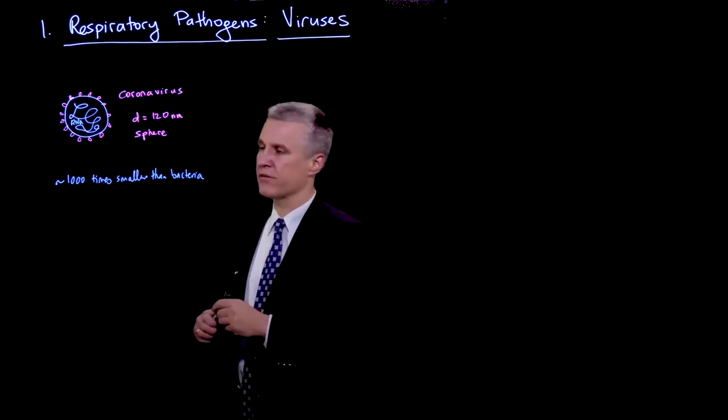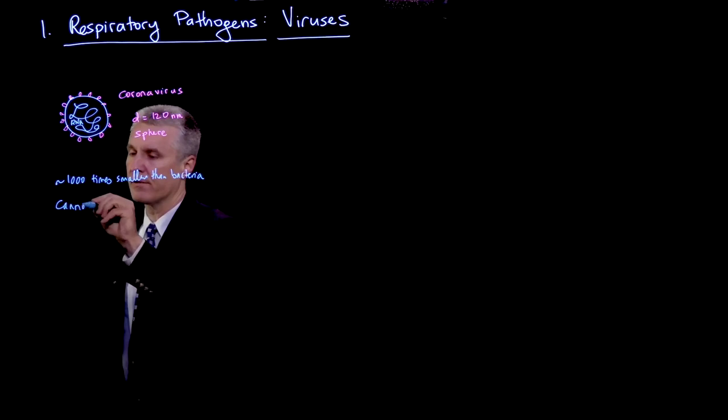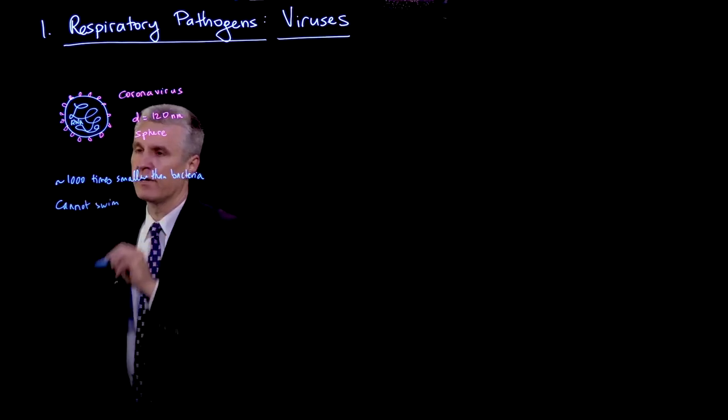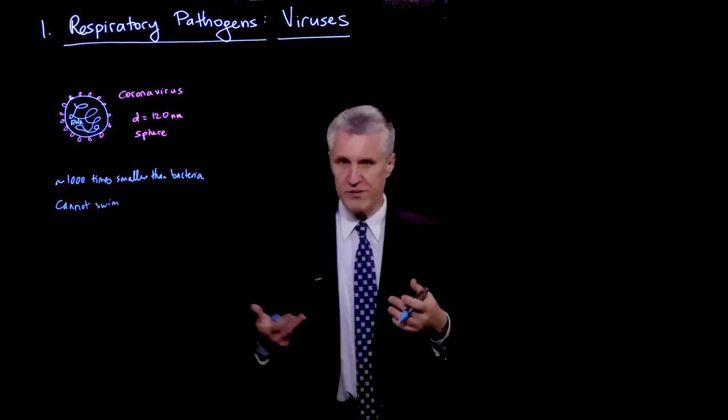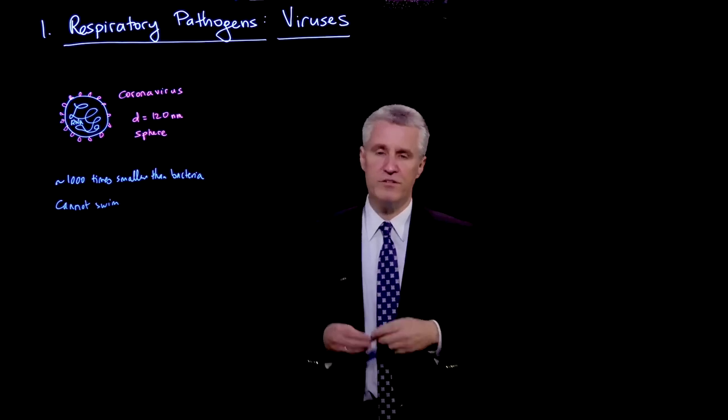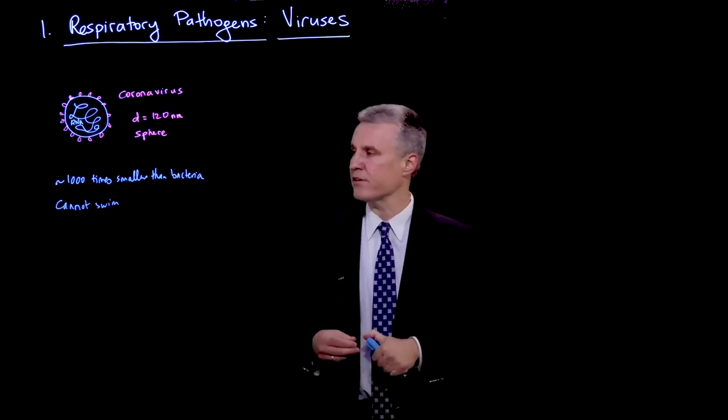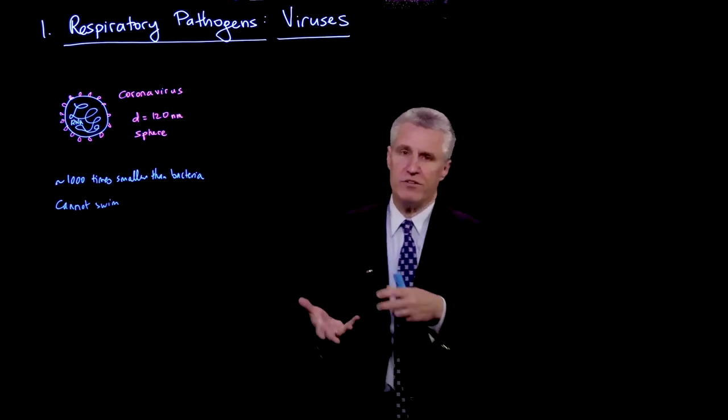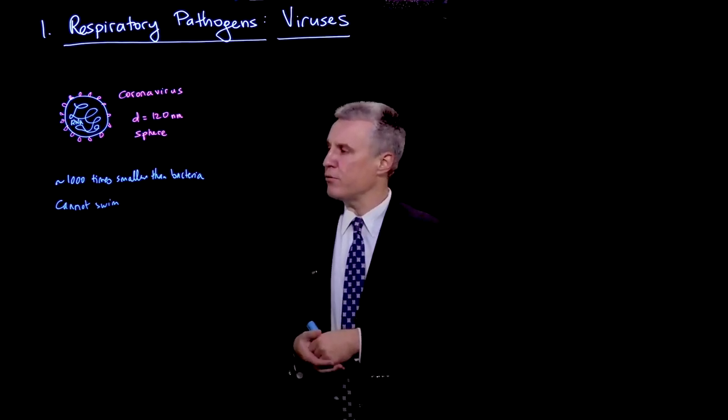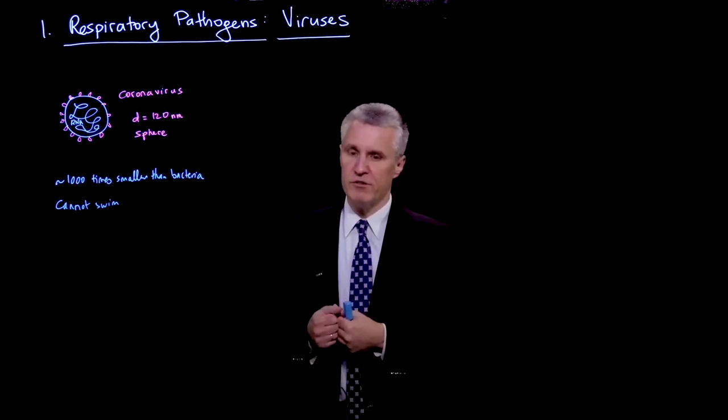Also, besides the fact that the virus is much smaller, it cannot swim. So bacteria have various means of locomotion, cilia, flagella, et cetera, whereas the virion essentially is a little hard sphere. So how can a virion actually transmit itself?